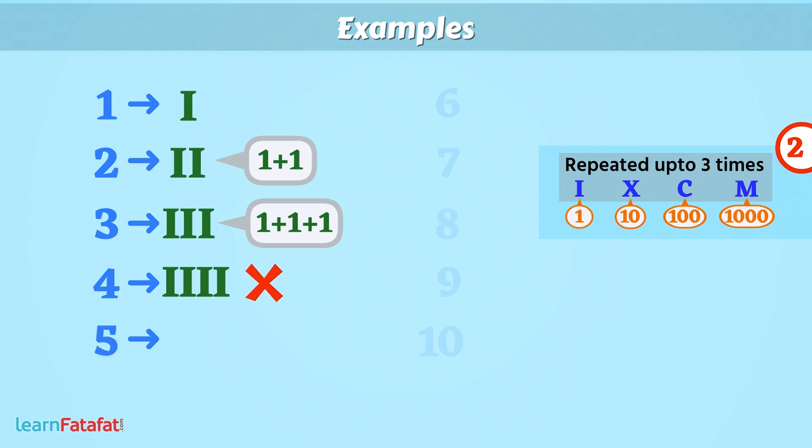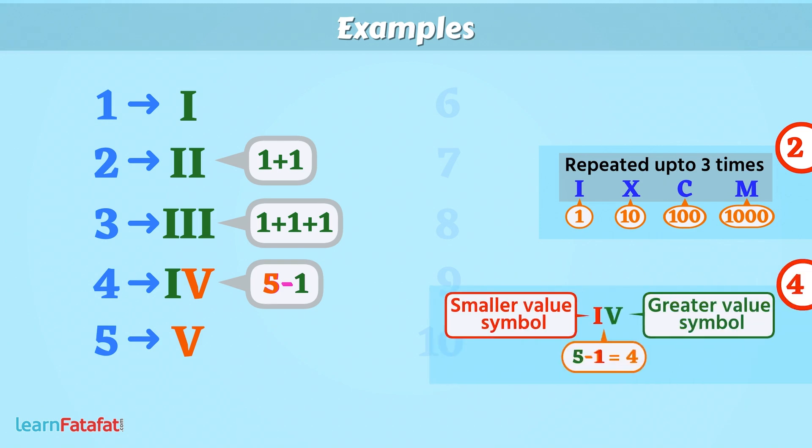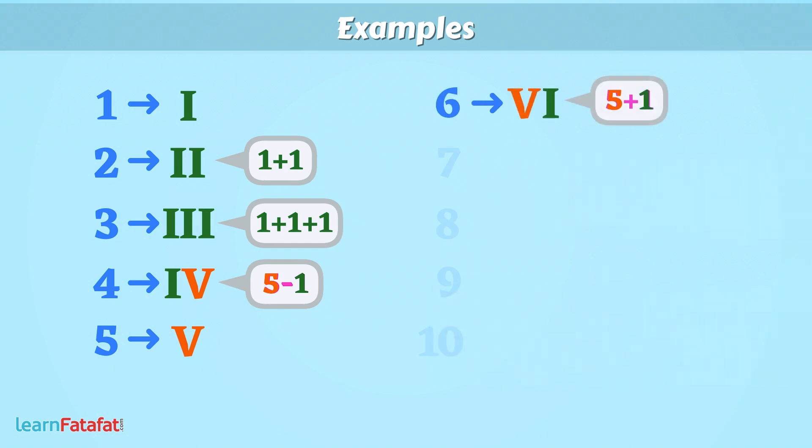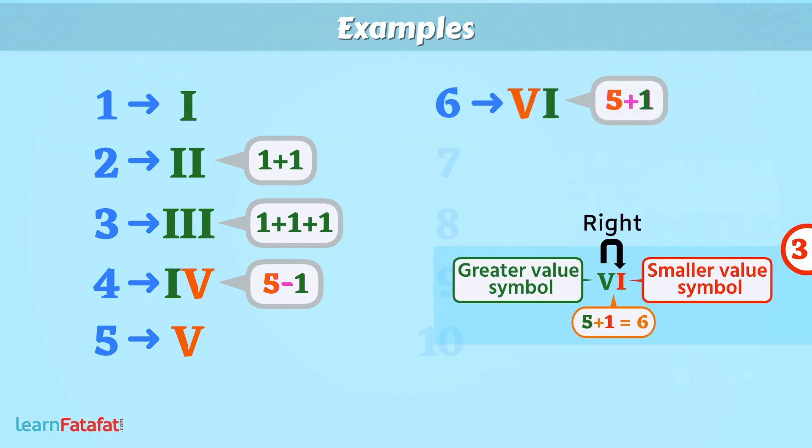However, if we write 5 like this, then 4 can be obtained by 5 minus 1. So by rule 4, we should write the symbol for 1 to the left of the symbol for 5. 6 is 5 plus 1, so by rule 3, we should write the symbol for 1 to the right of the symbol for 5.